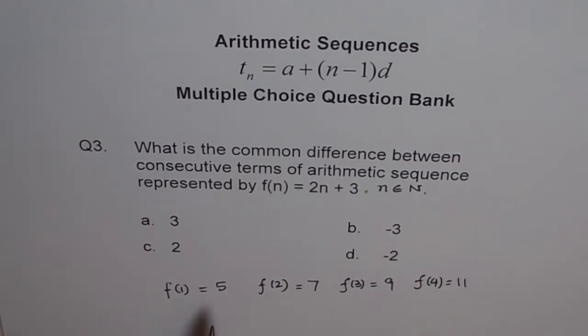Now, what is the common difference? Common difference is 7 minus 5, which is 2, 9 minus 7, which is 2, 11 minus 9, which is 2.